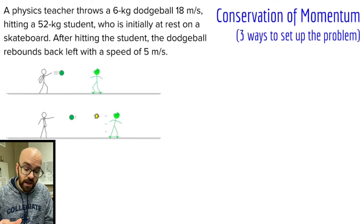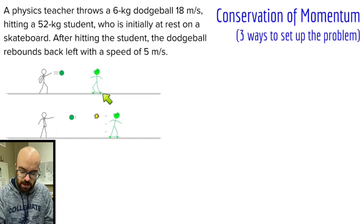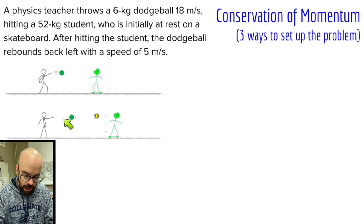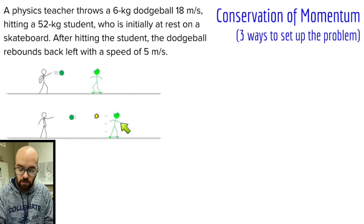In this case we have a physics teacher throwing a dodgeball at a student — we can see that in the before picture. The dodgeball is going to the right. The student is sitting on a skateboard so that there's low friction, and then after the collision, the dodgeball bounces back to the left and the student is moving to the right on the skateboard.